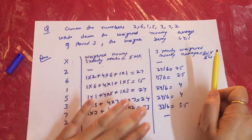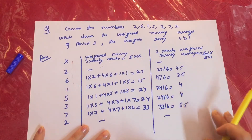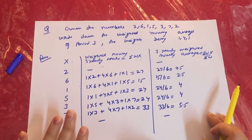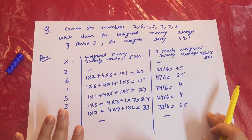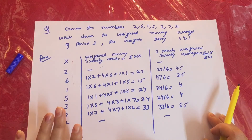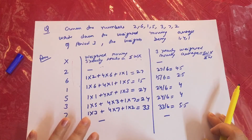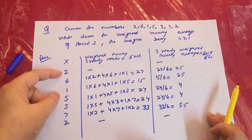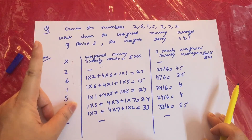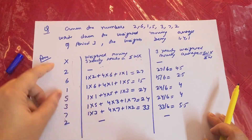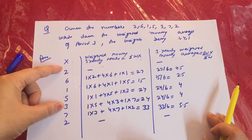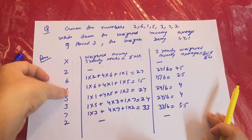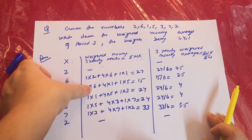This is how your weighted moving average is calculated. This question was based on 3-yearly weighted moving average. If in the exam you get a 5-yearly weighted moving average with the same data, then the mid-value of the first 5 numbers — 2, 6, 1, 5, 3 — is 1.